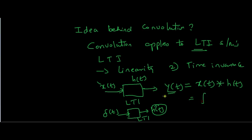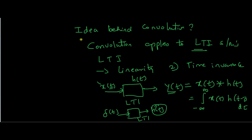For continuous time input signals, the convolution integral can be written as Y(t) equals the integral from minus infinity to infinity of X(τ) times H(t minus τ) dτ. This is a simple integral — people good at maths can solve it and get the required answer. But many students fail to understand the idea of what is going on behind convolution and why we solve this integral. Here X(τ) is the input and H(t minus τ) is the time-shifted impulse response.